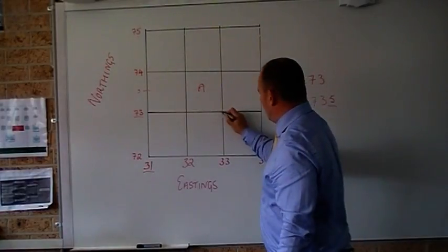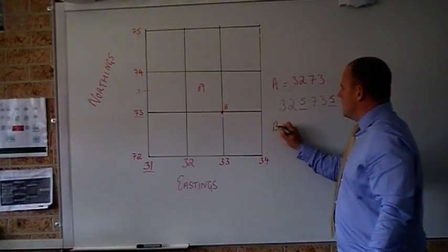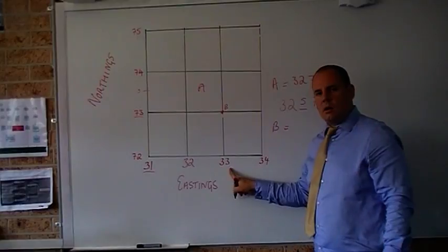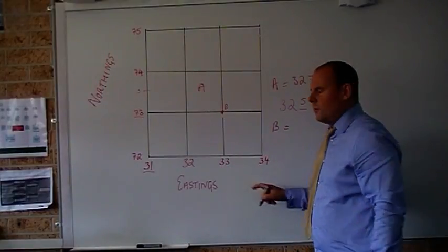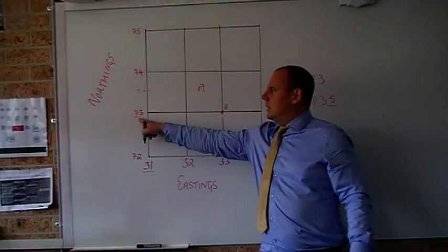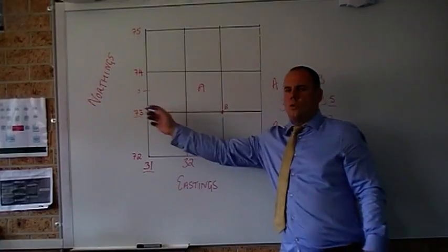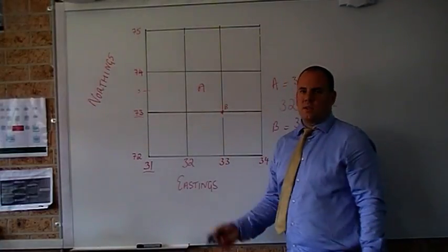If I had something on the line like B. Again, I start with my area reference, which is 4 numbers. So it's going to be 33. And then 73, my northing. But because it's on the line, it's 0. So this one's a really easy one.